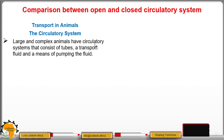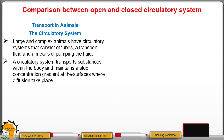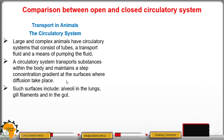Large and complex animals have a circulatory system that consists of tubes, a transport fluid, and a means of pumping the transport fluid. A circulatory system transports substances within the body and also maintains a steep concentration gradient at the surfaces where diffusion takes place — such as alveoli in the lungs, gill filaments in fish, and the digestive system where digested food substances must diffuse to the tissues.